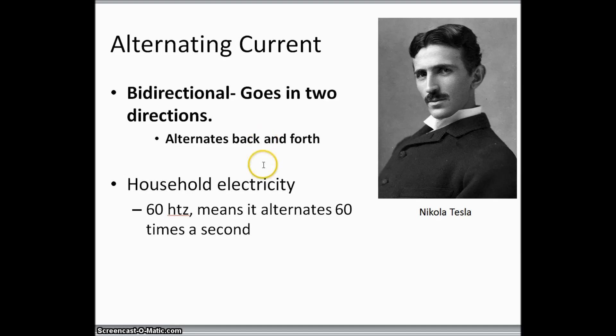This is what we use in our houses today. And we use what's called 60 hertz, which means that it alternates, it flips, 60 times per second. Not per minute, per second. So the electricity switches 60 times per second.